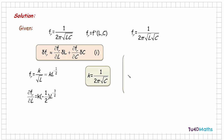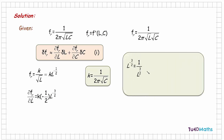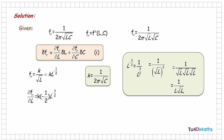Now, L^(−3/2) is the same as 1 over L^(3/2). And L^(3/2) is the square root of L cubed, which is √L × √L × √L. Since √L × √L = L, we get L^(−3/2) = 1 over L√L. Substituting back into the expression for the partial derivative ∂f/∂L, we get −k over 2L√L.